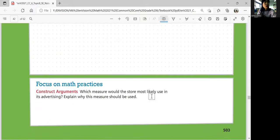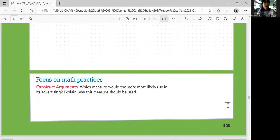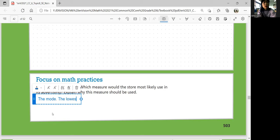All right, let's look at focus on math practices. Which measure would the store most likely use in its advertising? Explain why this measure should be used. The store would most likely advertise, this is the price. Which one is it? The mode, the cheapest one, because if people see the cheaper price, they'll be like, oh, I want to go and get it. But then they see all the other shoes and be like, actually, I want these shoes, these shoes look better, and they'll spend more money. So that's typically how advertising works. The mode.